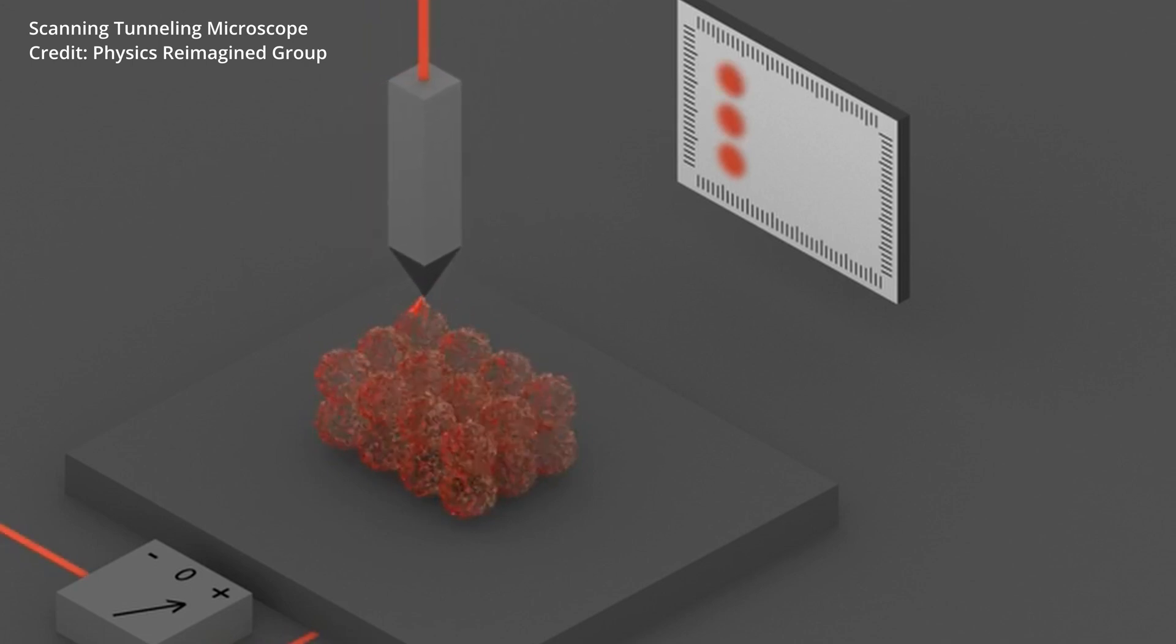Then, we have the tip scan throughout the surface. A closer tip will generate more current, and a further tip will generate less current.